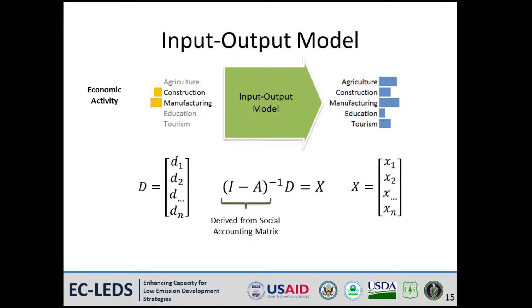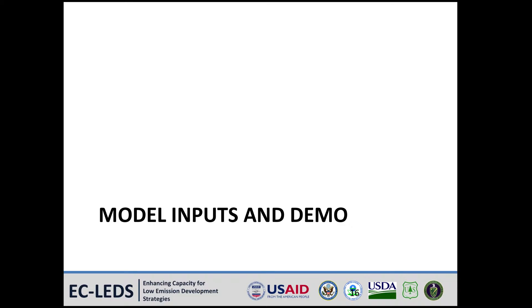Mathematically, the input-output model can be expressed as an equation that uses the direct effects of an economic activity, represented by the D-matrix, to calculate the effects on each of the sectors of the rest of the economy, represented by the X-matrix. Each variable in the D- and X-matrices represents one sector of the economy. Next, we'll discuss the model inputs and demo its use.